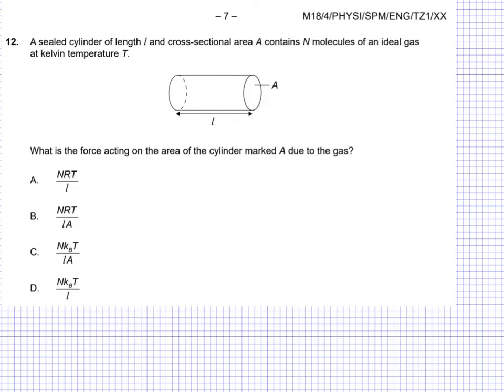Hello everyone, this is an IB Physics past paper review from May 2018, standard level paper 1. This is page 7 where we look at question 12. We have a sealed cylinder with length L and cross-sectional area A that contains a number of molecules N of an ideal gas at temperature T. Everything's constant and we're dealing with an ideal gas.